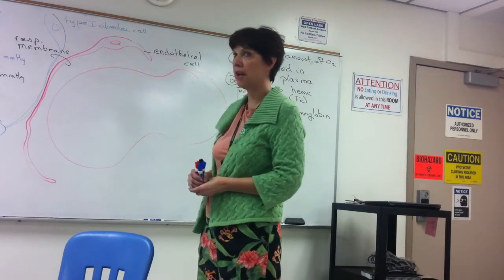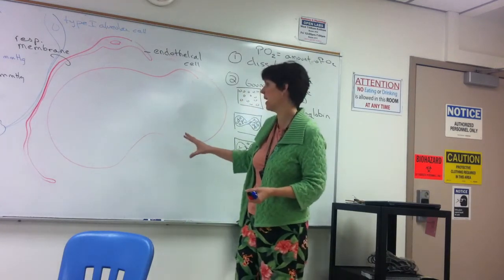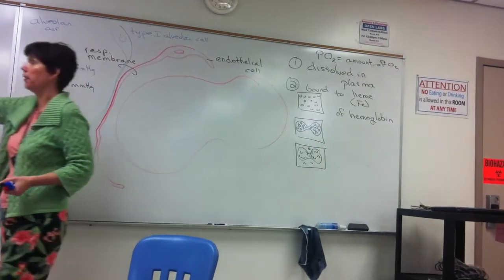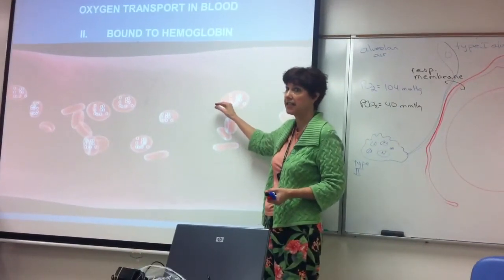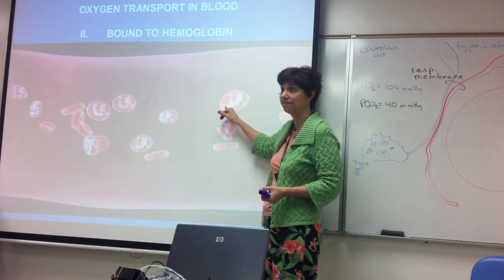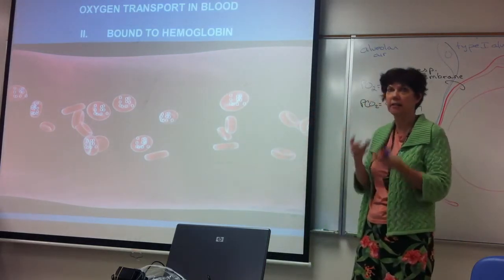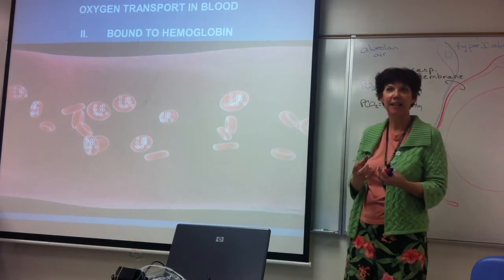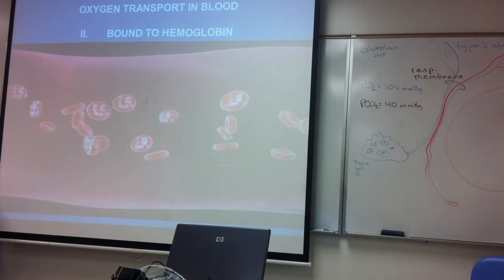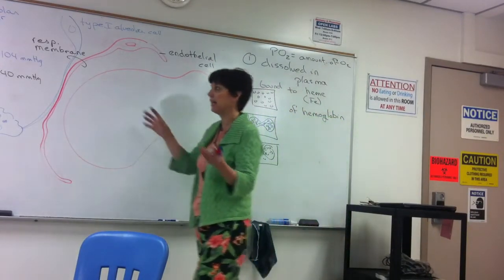Carbon monoxide is not deadly because it displaces oxygen in the plasma. It's deadly because it competes for a binding site with oxygen on the iron. Not only does it take the place of oxygen, but it keeps the oxygen that does bind from leaving. Individuals with carbon monoxide poisoning will still have pink fingernails and cherry red lips, but their tissues are dying of oxygen deprivation — even though the blood vessels have a normal PO2 and normal oxygen tension.